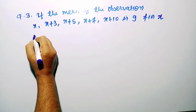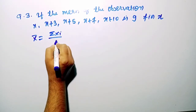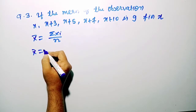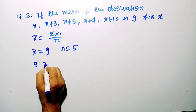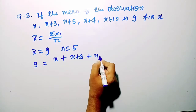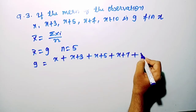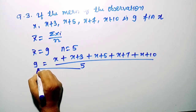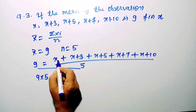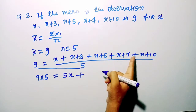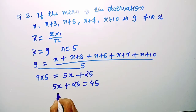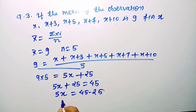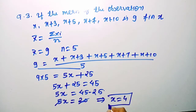Here the data is given with variables — we need to find the variable x given that the mean is 9 and total number of data is 5. Applying the formula: (x) + (x+3) + (x+5) + (x+7) + (x+10) = 9 × 5 = 45. This gives 5x + 25 = 45, so 5x = 20, therefore x = 4.